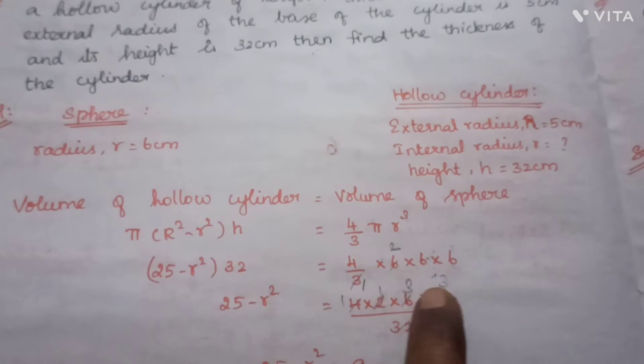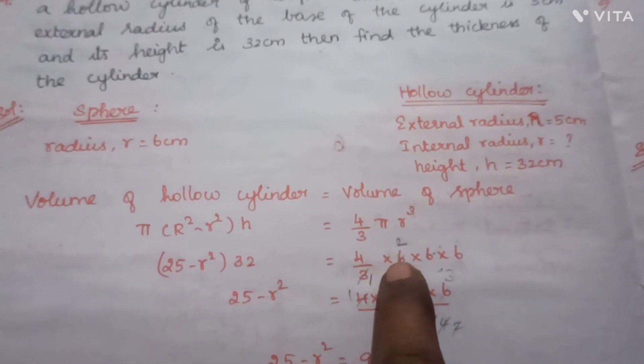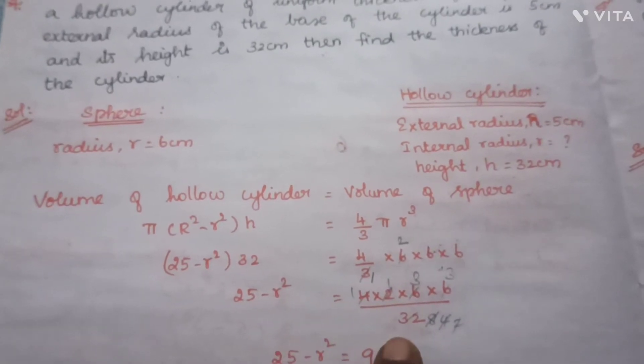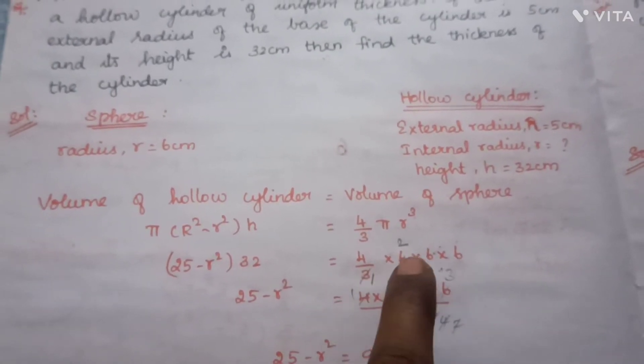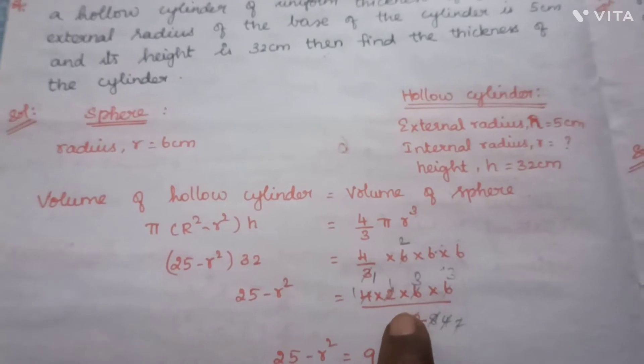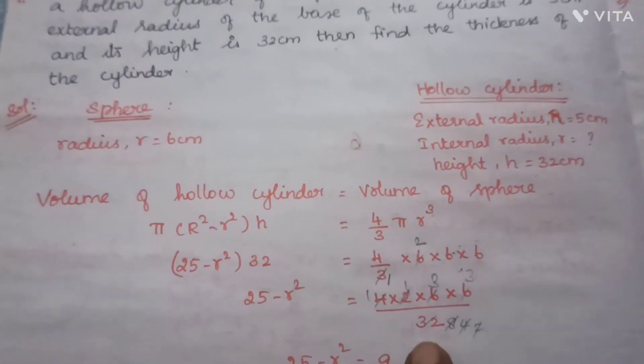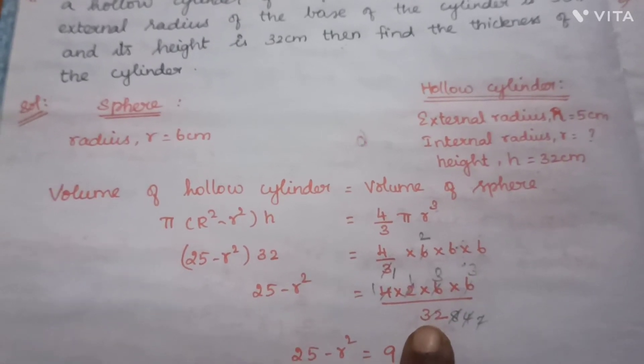Substituting the values: (25 - r²) × 32 = 4/3 × 6 × 6 × 6, which gives (25 - r²) × 32 equals the sphere volume.